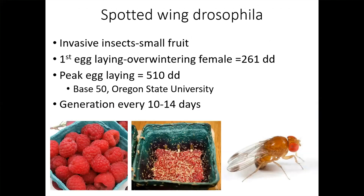Another example is spotted wing drosophila, which you may be familiar with if you're a small fruit grower — it's an invasive insect that causes substantial damage in fruit. The bottom picture shows the goal of a raspberry grower; if you have spotted wing drosophila and don't manage it, you end up with what's shown in the middle picture — it's an extremely devastating pest. We've worked out the degree days: the first egg-laying event occurs at 261 degree days, and around 500 degree days is when you get peak egg-laying activity, using a base of 50.